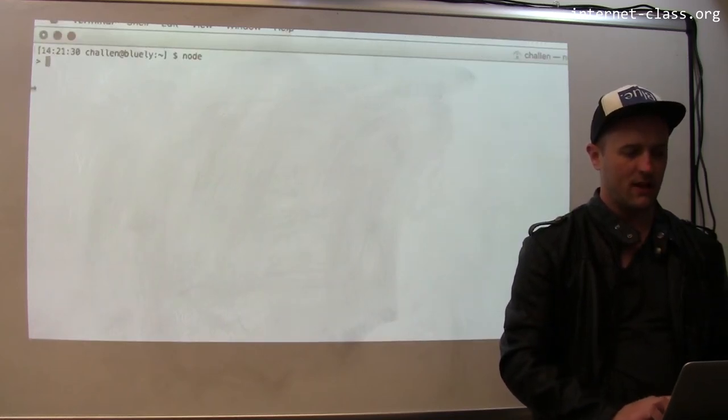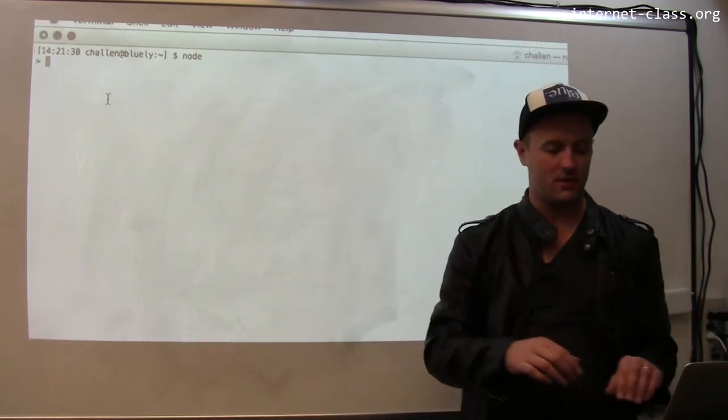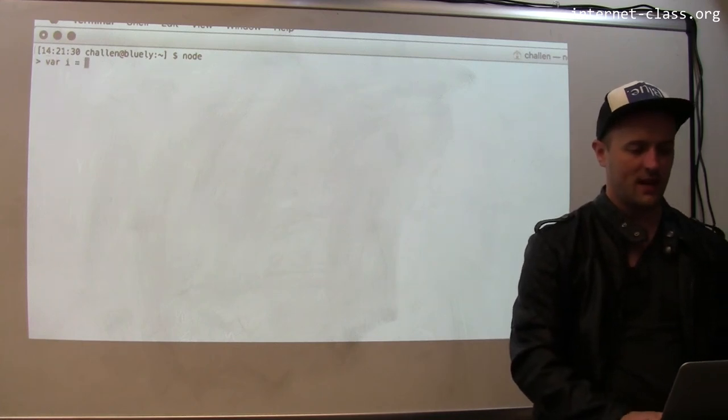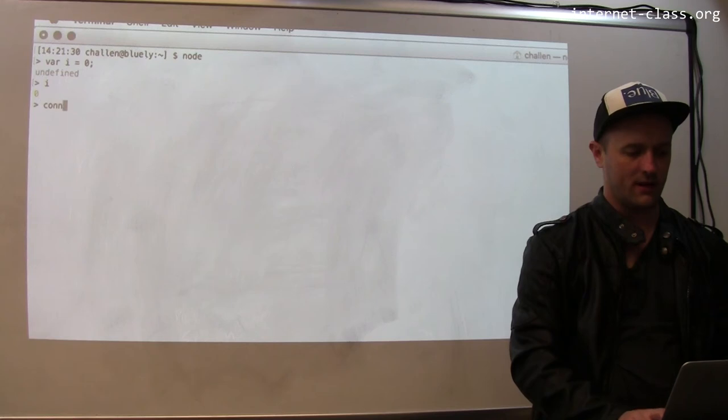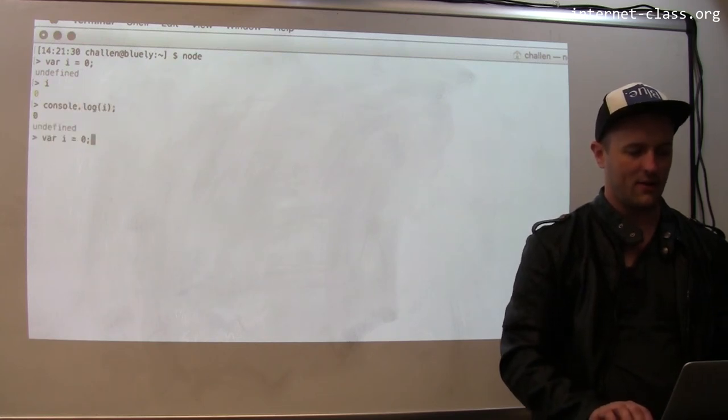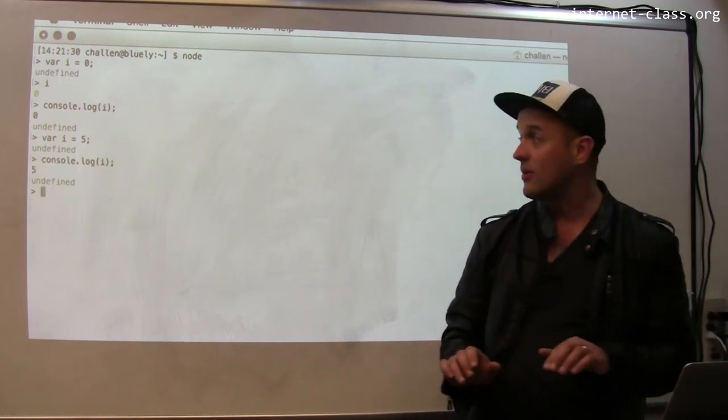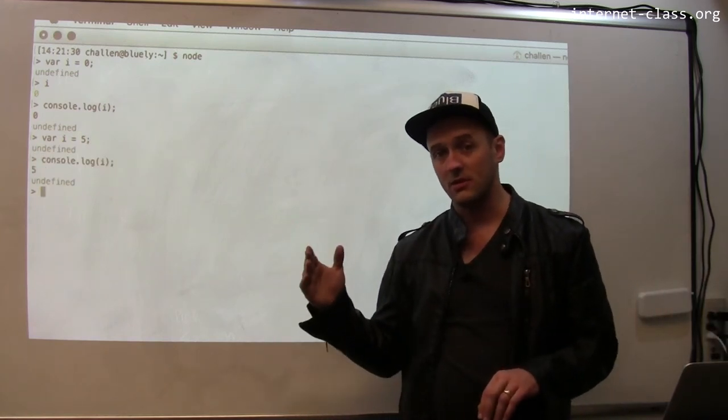I just ran Node. This is the Node JavaScript interpreter, and I can essentially do the same thing I did before. It also allows me to run console.log. I can print the value of i, I can set the value of i to a different value and then print the new value. This is another JavaScript interpreter.